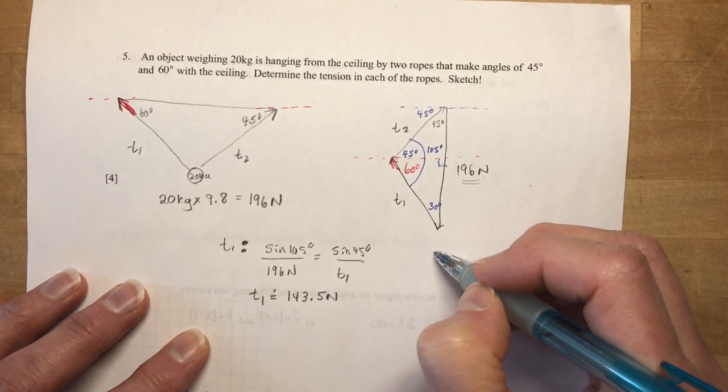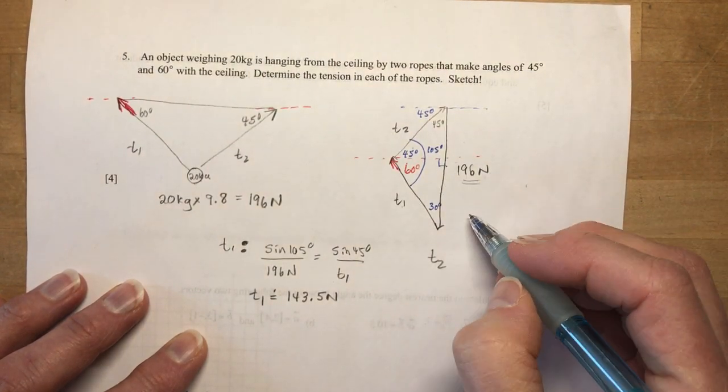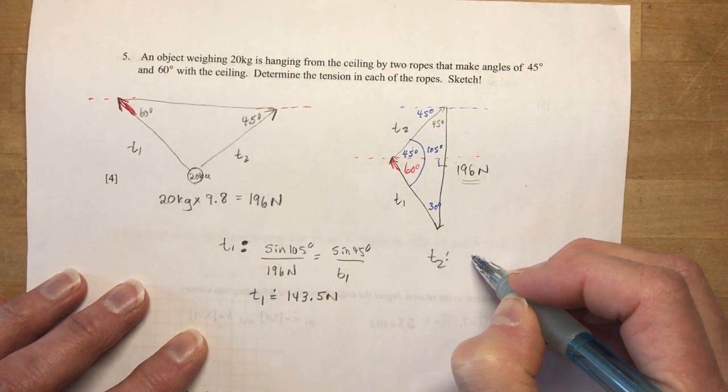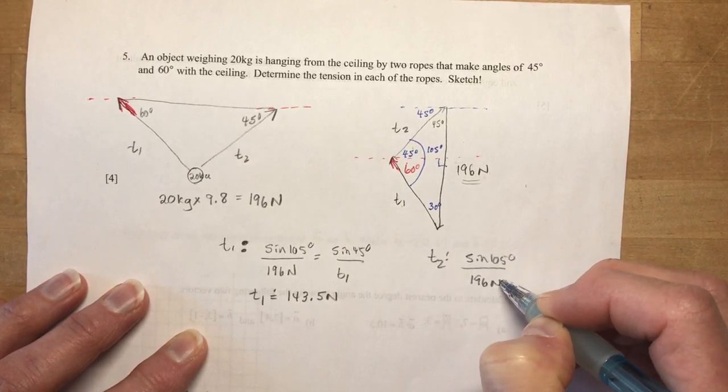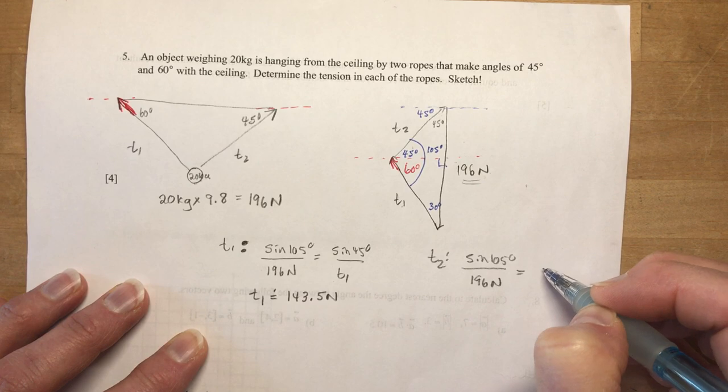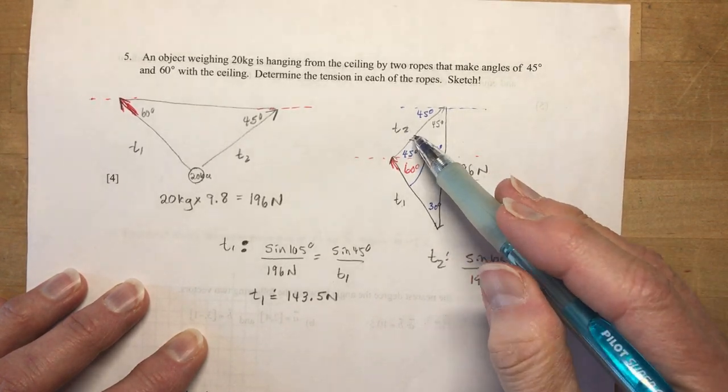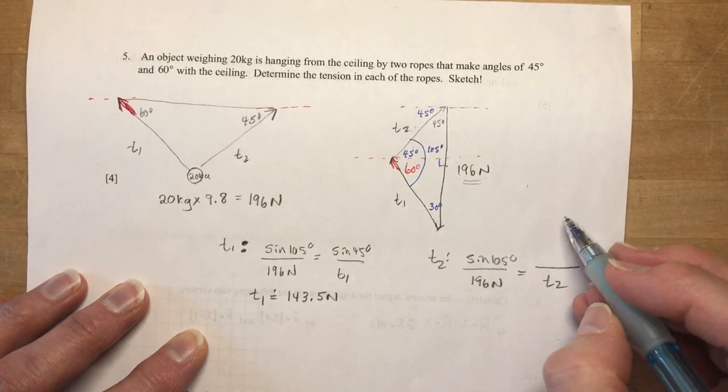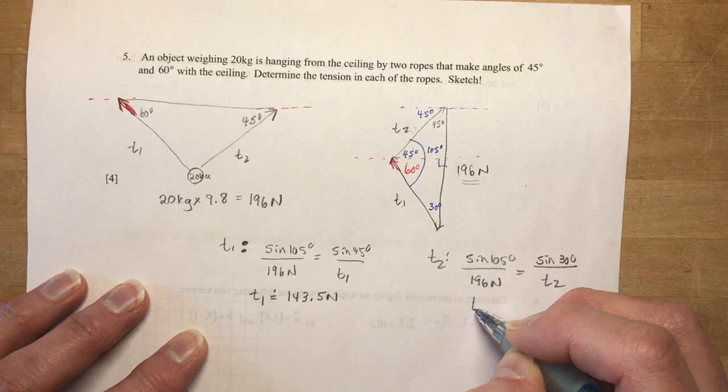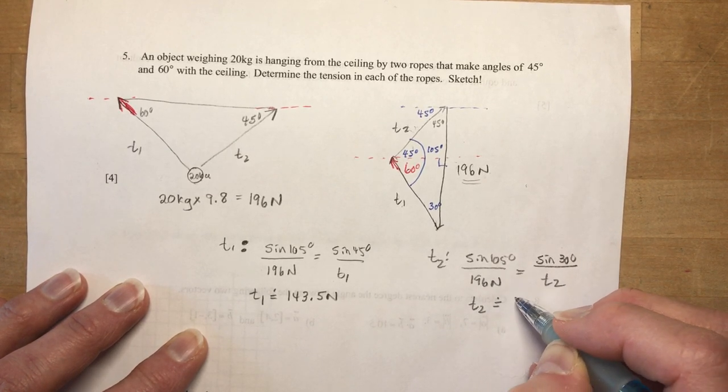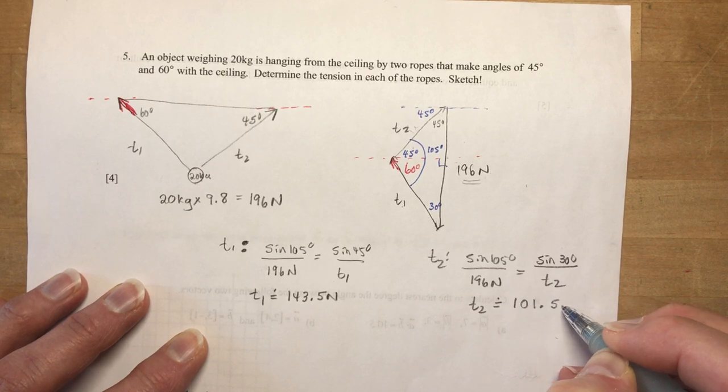And then you do the second one. These are pretty easy when you, once you've drawn this diagram, right, it's really pretty basic. So I have the sine of 105 over 196 newtons equals T2 force. So this one matches with this one, the opposite angles. So I have the sine of 30 degrees. I do my T2 calculation and I get approximately 101.5 newtons.